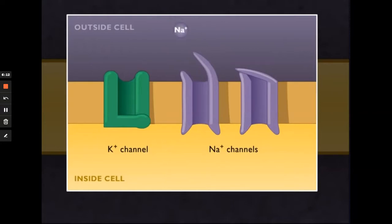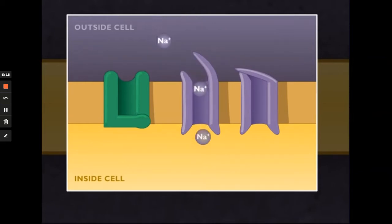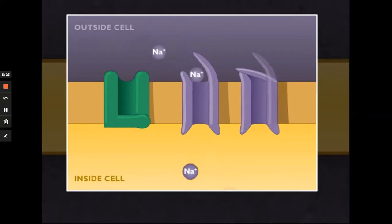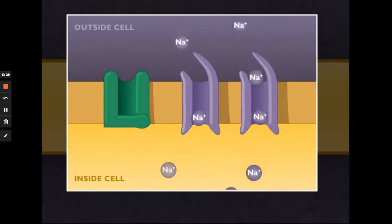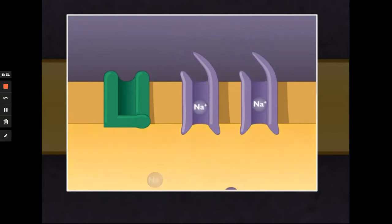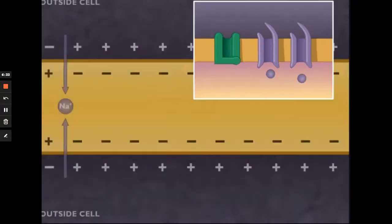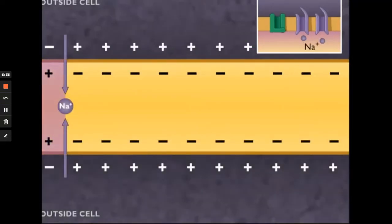If the change is enough, it causes nearby voltage-gated sodium channels to open. So many sodium ions flood into the cell that the membrane there is depolarized — with the local region inside the cell having a net positive charge and the outside having a net negative charge. This affects neighboring voltage-gated sodium channels, which then open, moving the depolarization along the membrane. This moving depolarization is called an action potential.